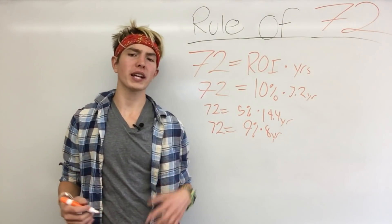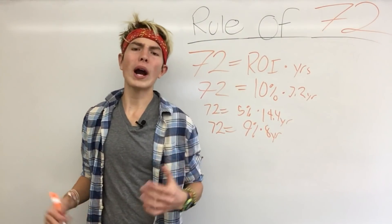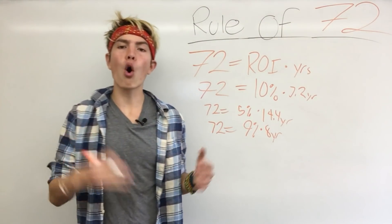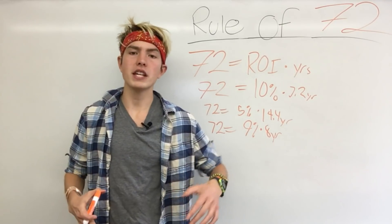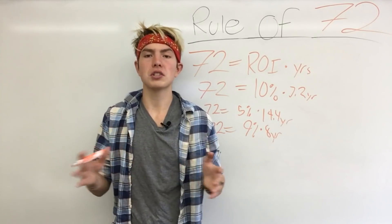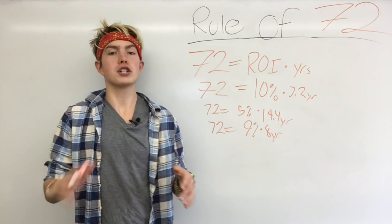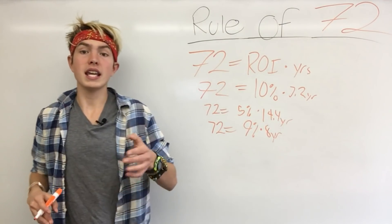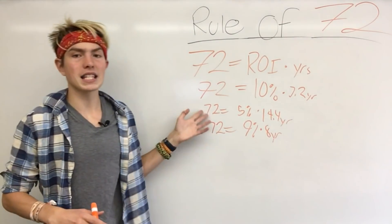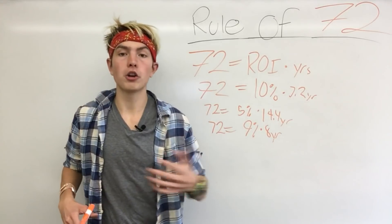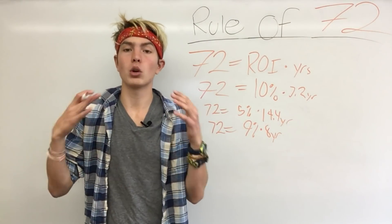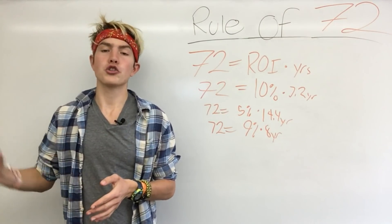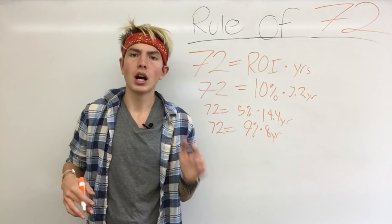So why does the rule of 72 work? It seems like a pretty weird number — why does it work in so many cases? To be honest, it's not perfect. Up to about 7%, it's going to overestimate the amount of time by anywhere from half a year to a couple months. If you're over 10%, it's going to actually underestimate how long it's going to take you. So if you had a 72% rate of return, this estimates it would take one year, which obviously isn't right. But it's not going to underestimate by more than a year at any point.